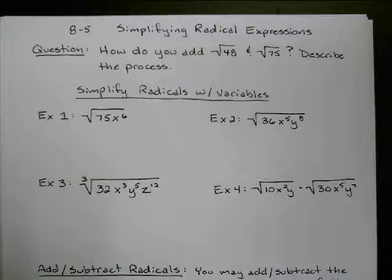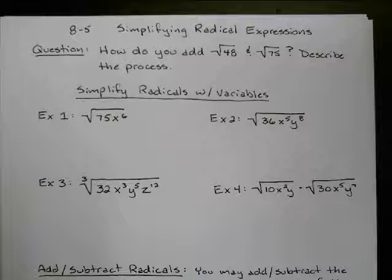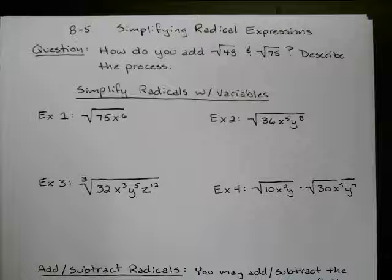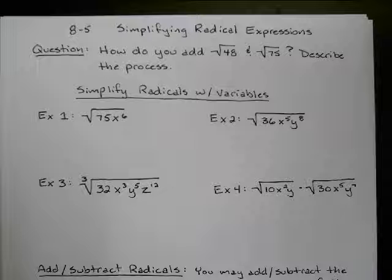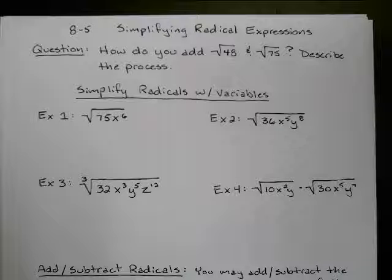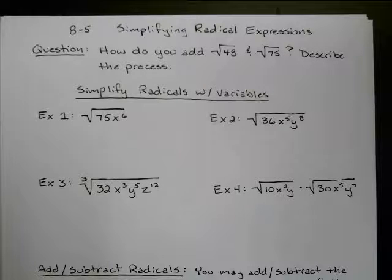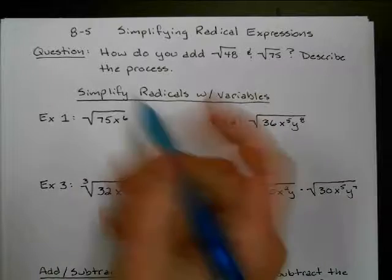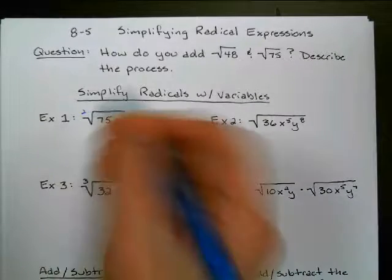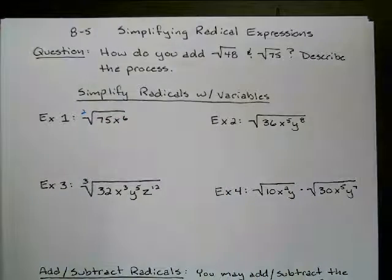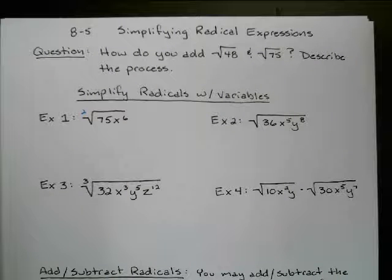Before we get to that type of problem, let's look at some simplifying radicals with variables, especially variables that are not going to be really nice and do exactly what we want. So remember, we know that when there's no number there, the index is 2, which means I'm looking for 2 of a kind to take outside of the radical.